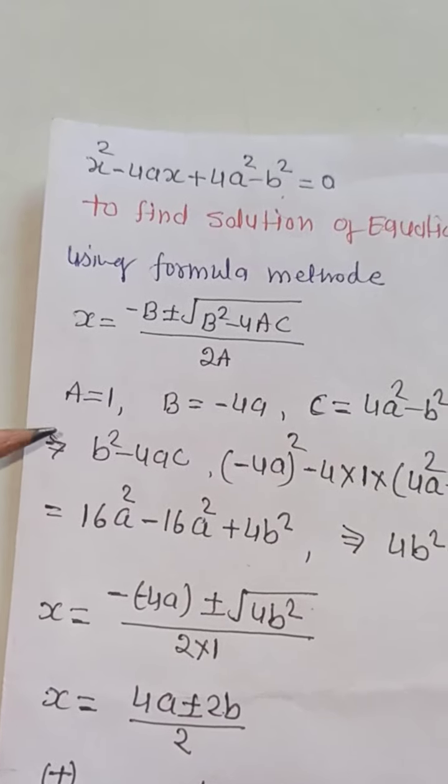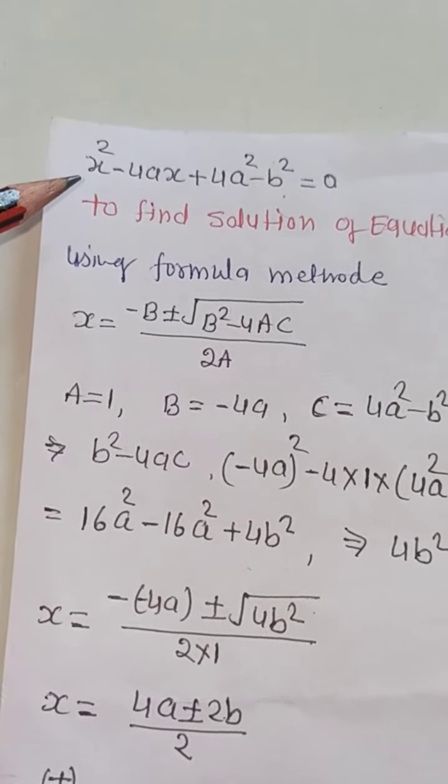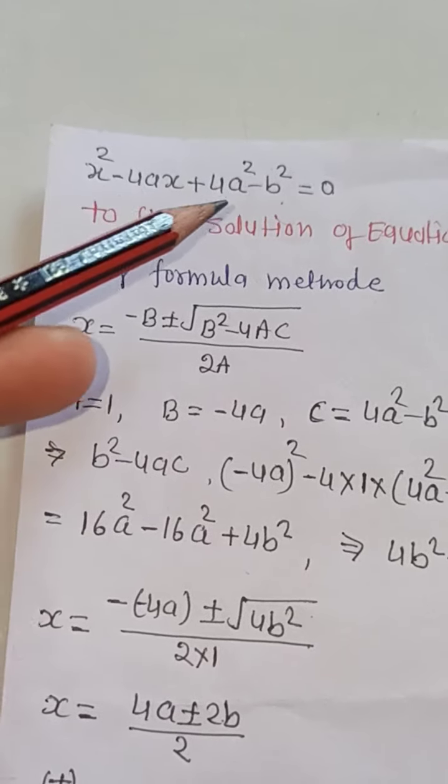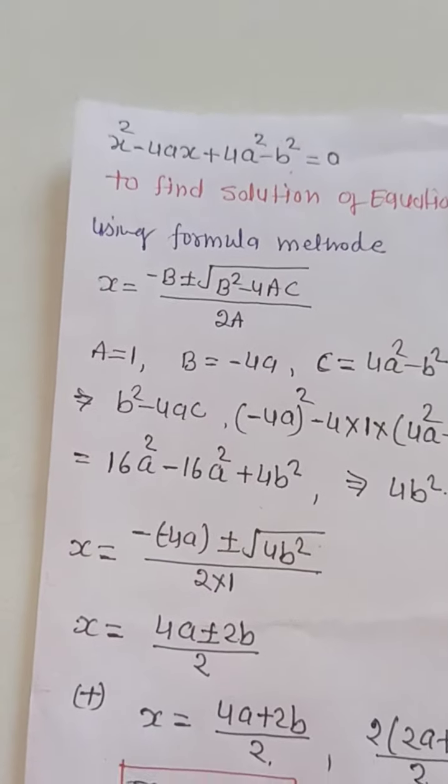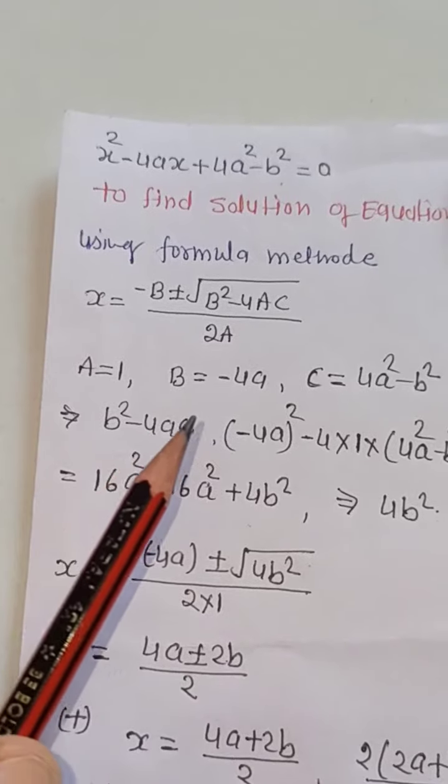Let's see here we will substitute value. A will be 1, B will have minus 4a, and C will be complete value 4a square minus b square. Now we will find b square minus 4ac.